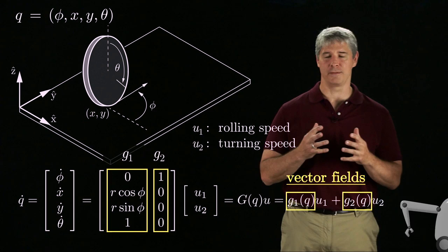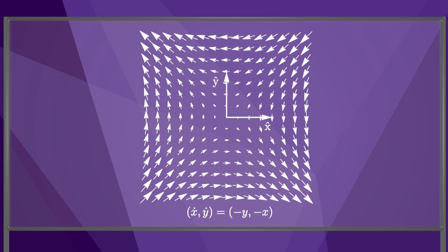These vector fields are defined on a four-dimensional configuration space, so they're hard to visualize. Here's a simple velocity vector field defined on a two-dimensional space: X dot equals minus Y and Y dot equals minus X.